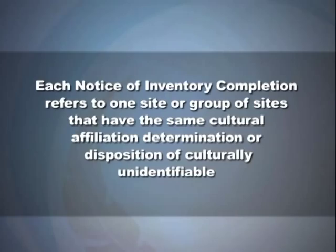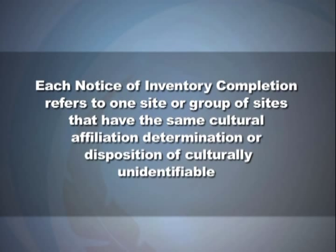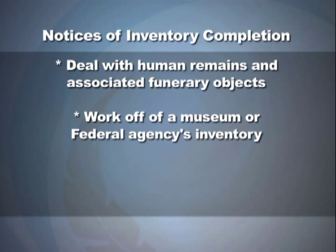Each notice of inventory completion refers to one site or group of sites that have the same cultural affiliation determination, or disposition of culturally unidentifiable. Notices of inventory completion work off of a museum or federal agency's inventory and reflect the decision about cultural affiliation or disposition. If an inventory is an item-by-item description of your collection and consultation efforts, then a notice of inventory completion is a story or brief narrative of the inventory. The publication of a notice acknowledges the rights of the listed tribe or tribes to receive the Native American human remains and associated funerary objects.